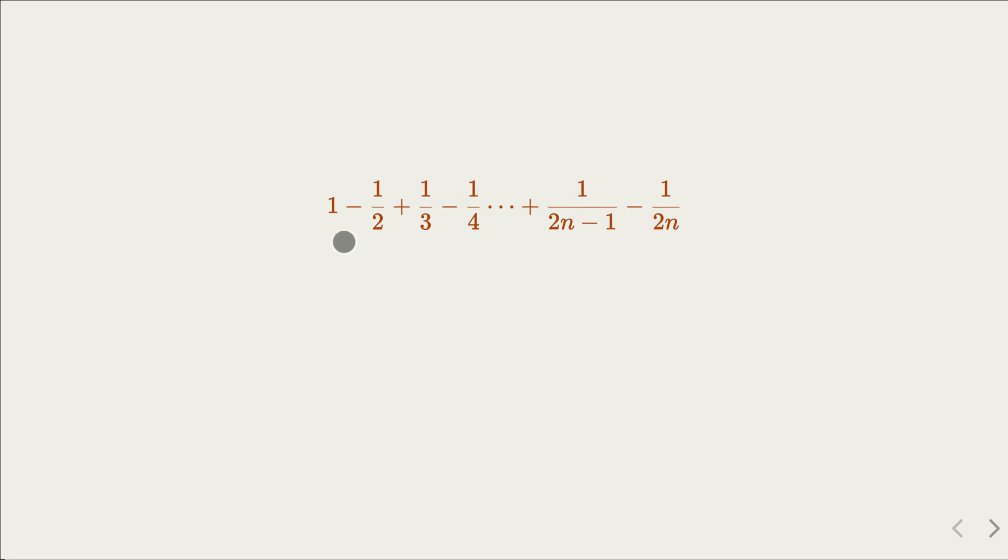So here, if we turn everything to plus, so the term from 1 up to 1 over 2n, of course, in order for the equality to hold, we have to subtract twice of the term that has negative sign here. That is, we need to minus 2 of this.